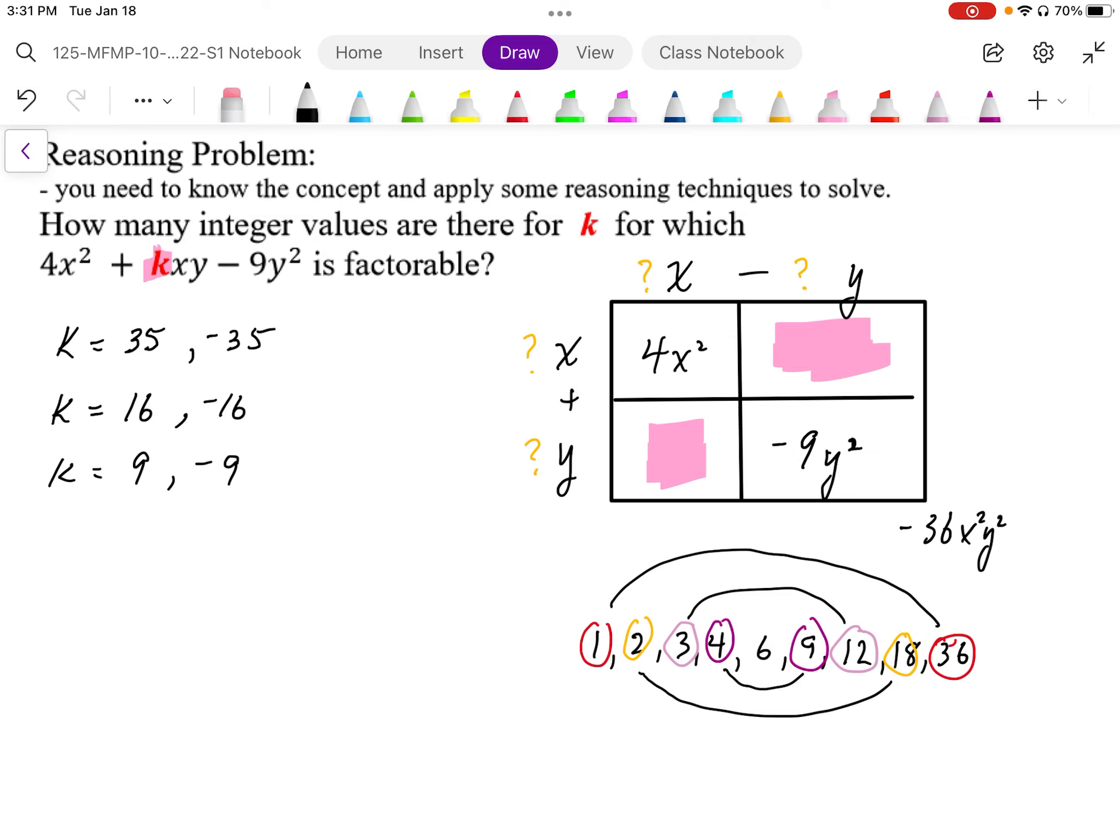When we pair up the 4 and the 9, the k value can be positive 5 or negative 5.